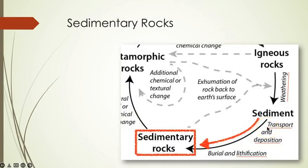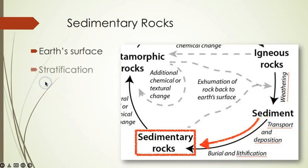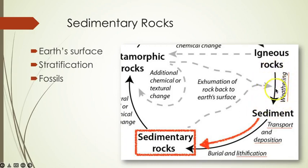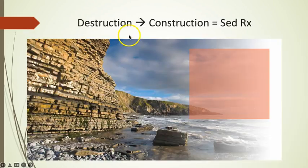Sedimentary rocks always form on Earth's surface. They commonly show layering, known as stratification, and can contain evidence of ancient life in the form of fossils. They are the product of weathering of rock exposed on Earth's surface and formed through the process of lithification and precipitation.